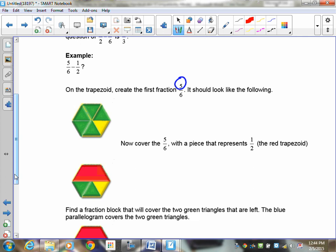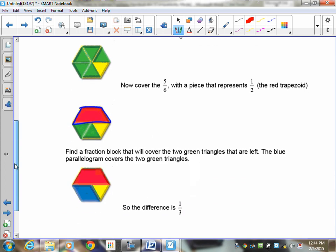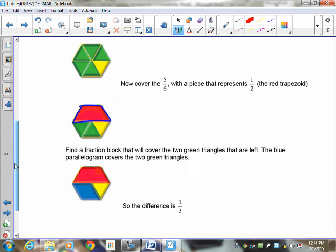Now I need to take away 1 half of that. So I can take and cover it with a red 1 half. So there's the 5 sixths. I cover up the 1 half and you'll notice that I have this shape here and this shape here left.